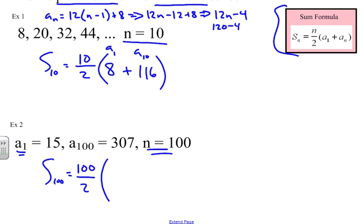We take our first term, which they happen to give us, 15. That's our first term. And we're going to add that to our last term, which would be a sub 100. We're going to the hundredth term, and that would be 307. We can, once again, put this in our calculator, and that will give us our sum.